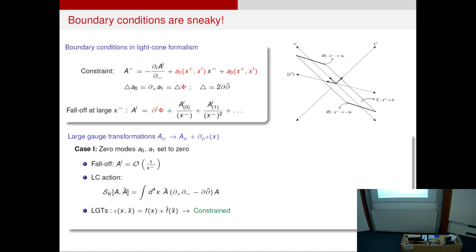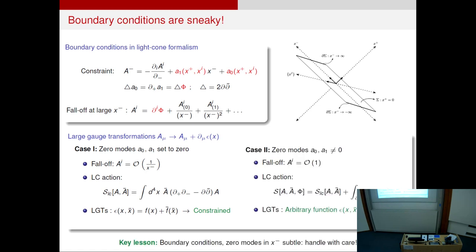And the way this affects the symmetries is the following. So let's say I set them to zero like I did in the previous slide. Then I'm taking a stronger falloff, where AI's go as one over X minus. In that case, I have the simple light cone action as before. But the price to pay is that there is some extra condition on the gauge parameter, on the large gauge transformations, which kill a part of the symmetry. So we only have some holomorphic and anti-holomorphic functions. But if I keep the, this boundary field phi, so the fields are now order one. In that case, I have a boundary term in the action. And then I don't have any extra conditions on the gauge parameter. So we have the full set of large gauge transformations.